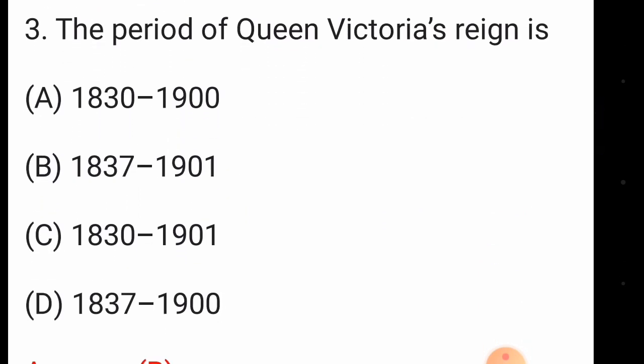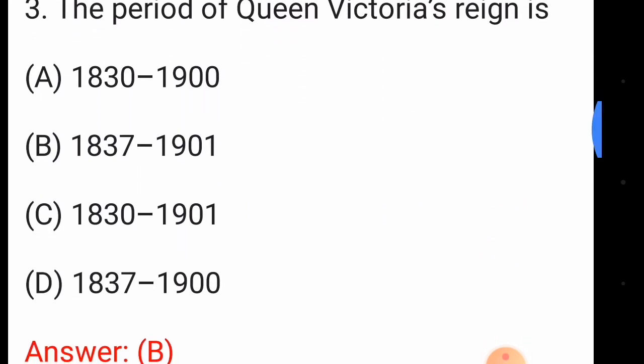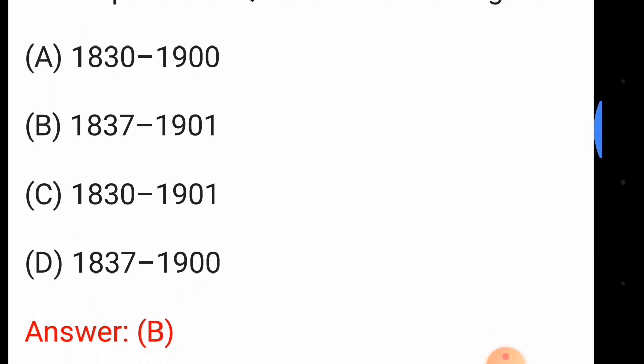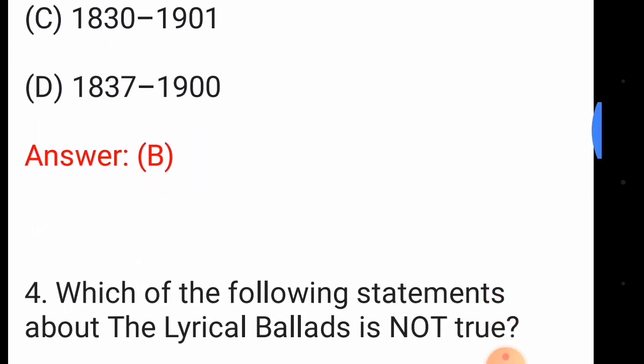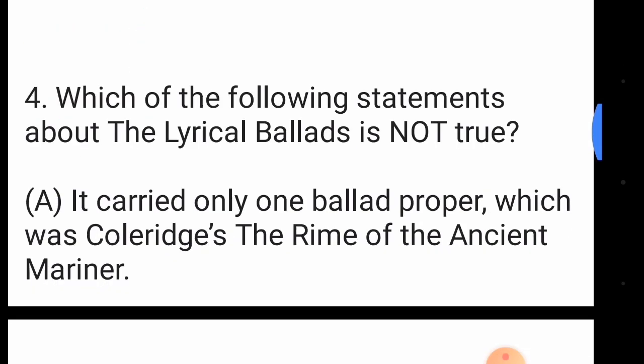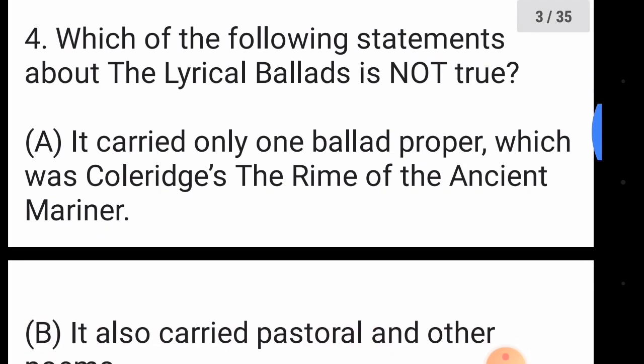Question number three: the period of Queen Victoria's reign is — the answer is option number B, 1837 to 1901. Question number four: which of the following statements about the Lyrical Ballads is not true?